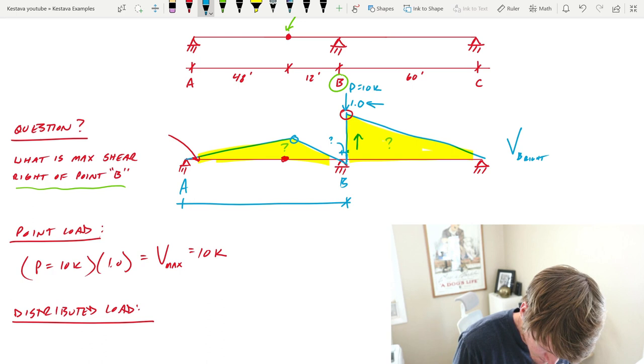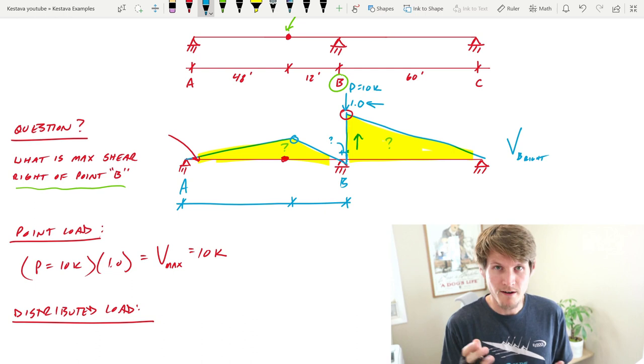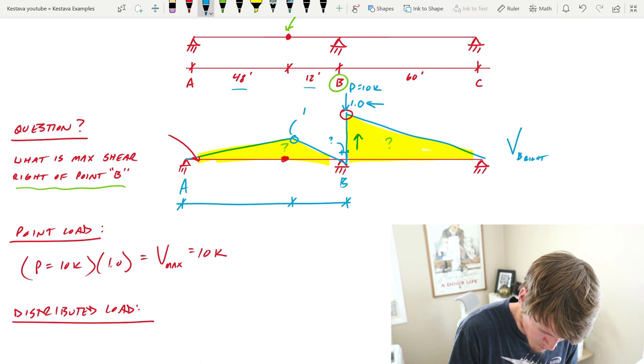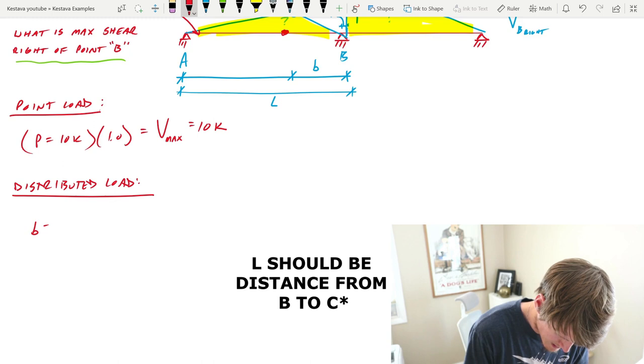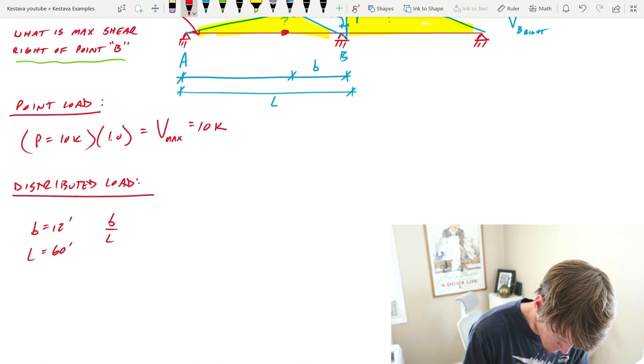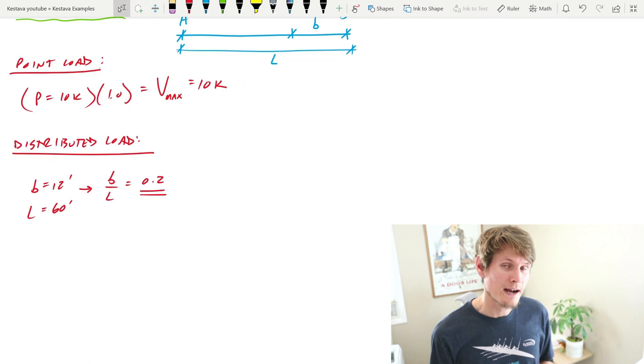In our previous examples, all we have to do when we have this type of shape for shear is just take the ratio of where your hinge is. So this point here would just be equal to the ratio b over l. In this case, b is this dimension here and l is our entire span from A to B. So going back to red, if b equals 12 feet and l equals 60 feet, b over l equals 0.2.